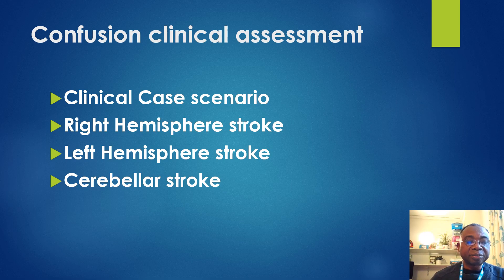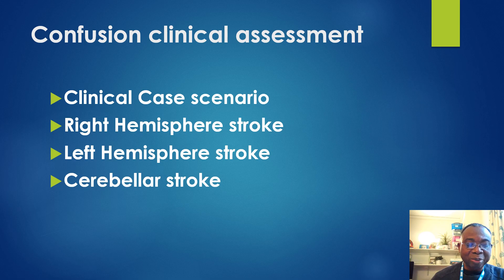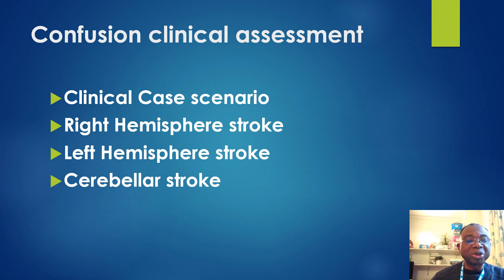The third group is cerebellar stroke. The cerebellum controls many of our reflexes and much of our balance and coordination. A stroke in the cerebellum causes abnormal reflexes of the head and torso, along with problems of coordination and balance, dizziness, nausea, and vomiting.